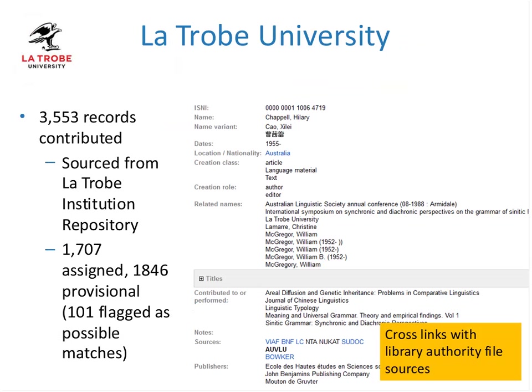Moving on to another example, La Trobe University, a non-VIAF example. They've contributed just over 3,500 records into the ISNI system — a parallel scale to what you might get from a NACO institution working on contributions to the NACO authority shared file. About half of the records were able to be assigned automatically through matching algorithms; the rest have been flagged as provisional and are being worked through. Their goal is to have the whole lot assigned with ISNIs and integrated into the ISNI system with cross-links to NACO and VIAF. This shows the effect of doing something very like normal name authority control, but because it's about managing identities, you're actually building it into an interlinked, cross-linked, networked environment straight away.